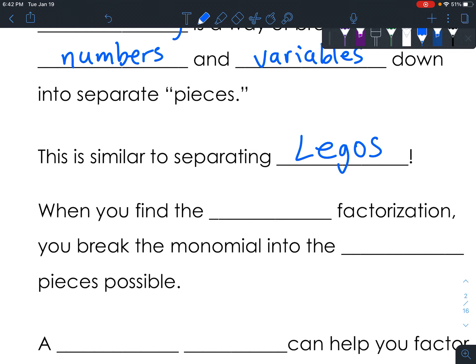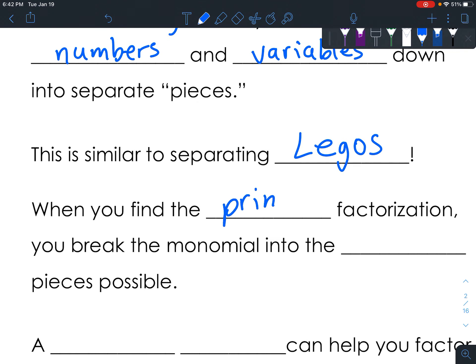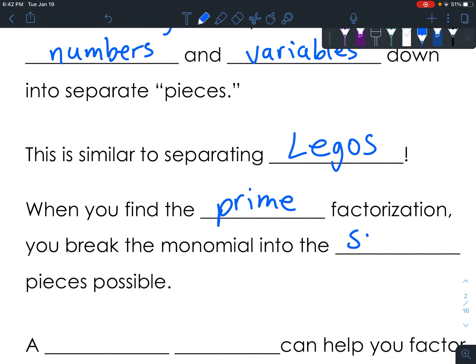But you can only break it down so far. Once you get to the pieces, that's the basic piece. When you find the prime factorization, you break the monomial into the smallest pieces possible. This would be like breaking it into just tiny Lego pieces.